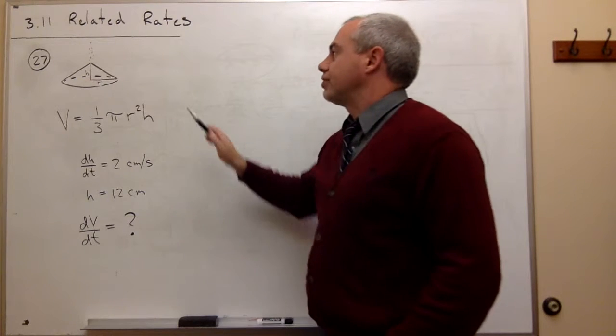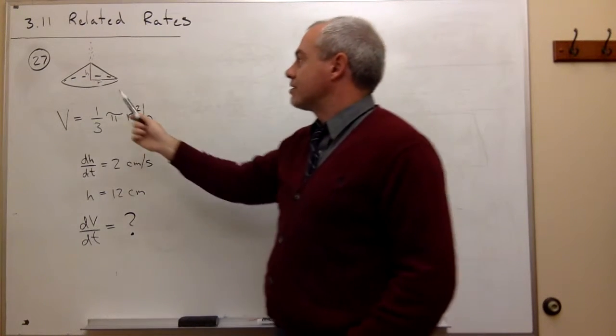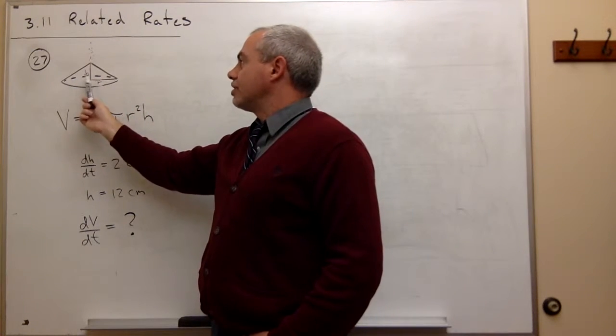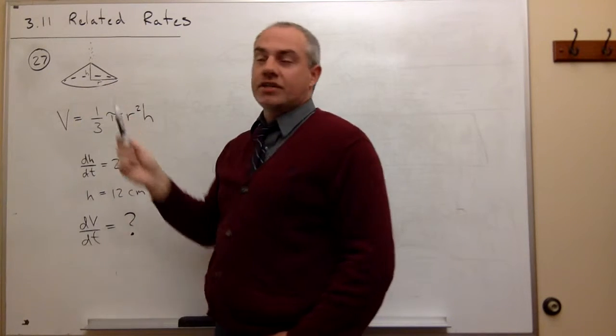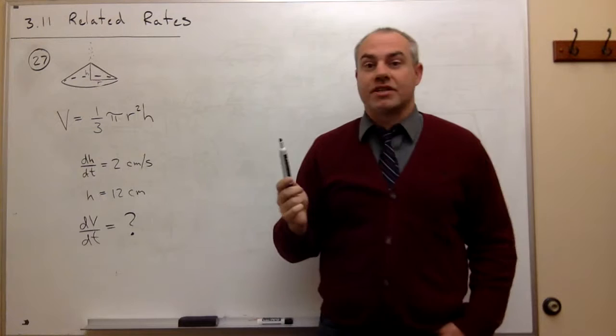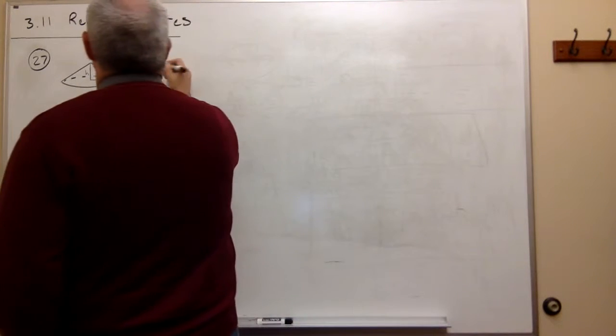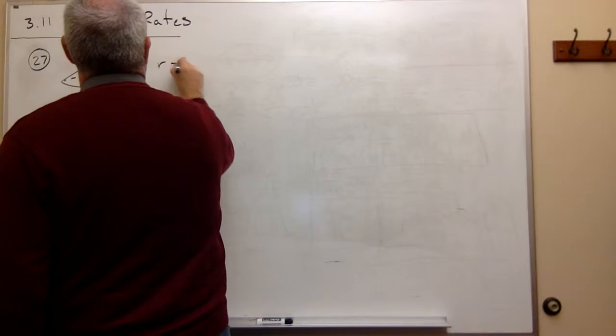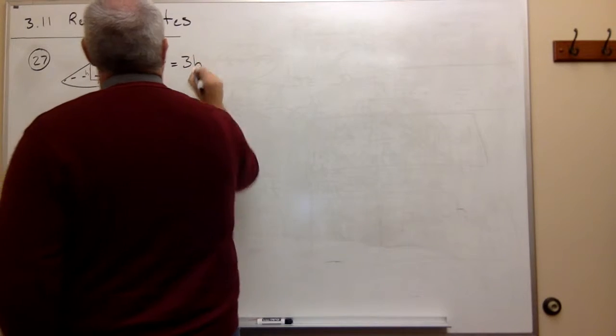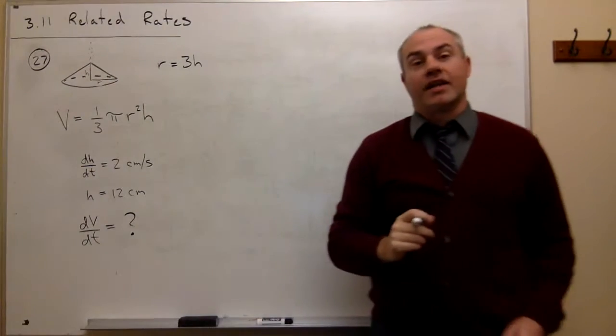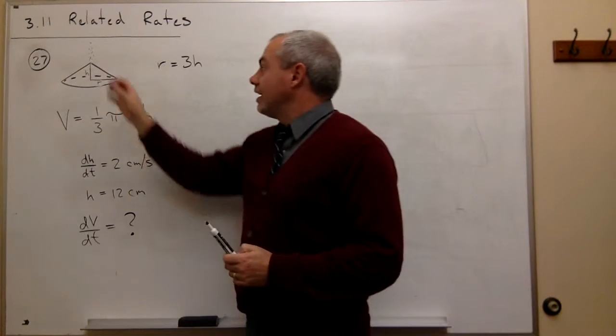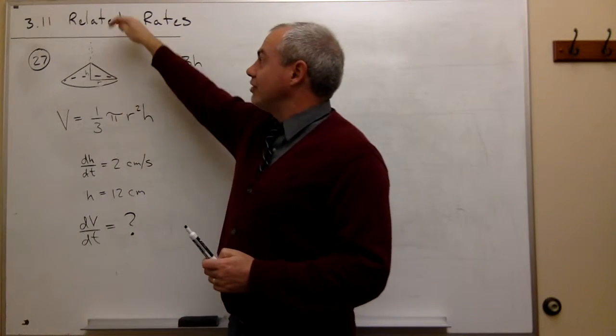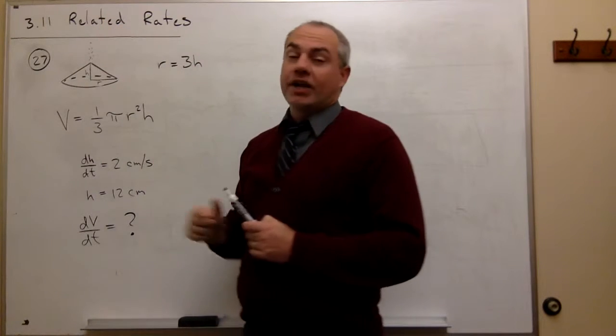piece of information that we're given in this problem is we know that there's a relationship between the height of this cone and the radius of this cone. The problem gives us the information that the radius of this cone is three times the height of the cone, and that's going to help us to be able to solve this problem.